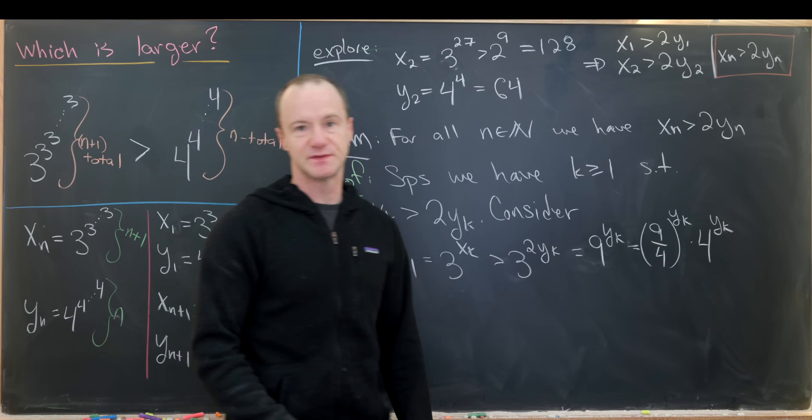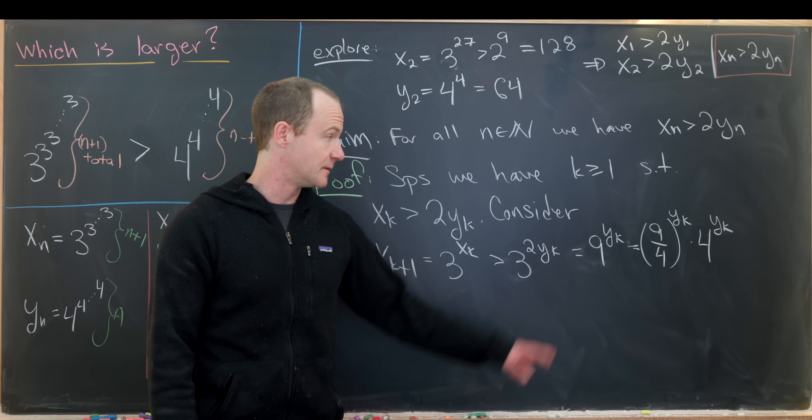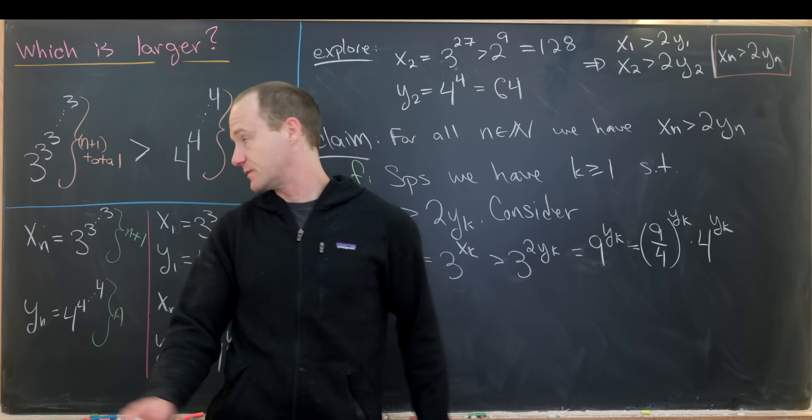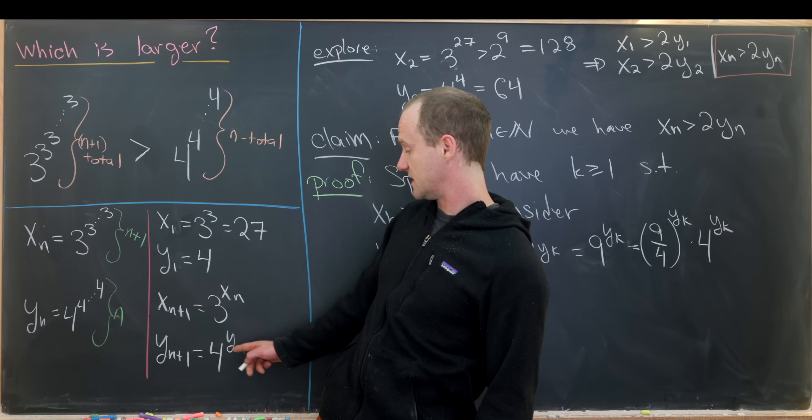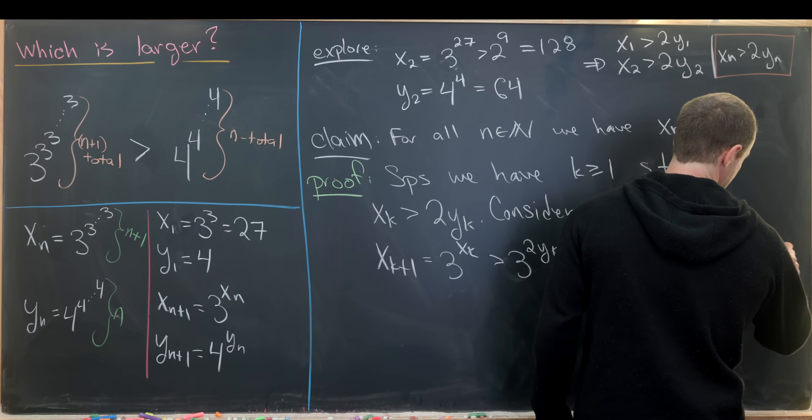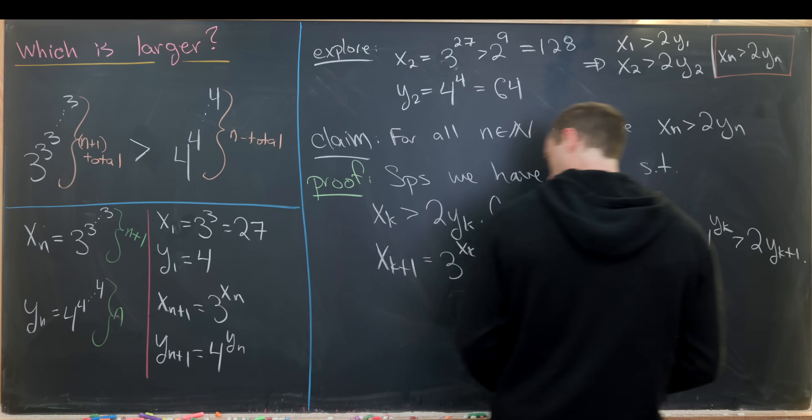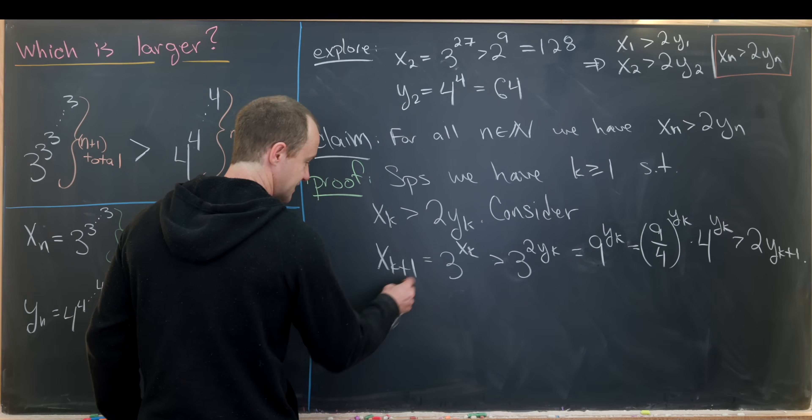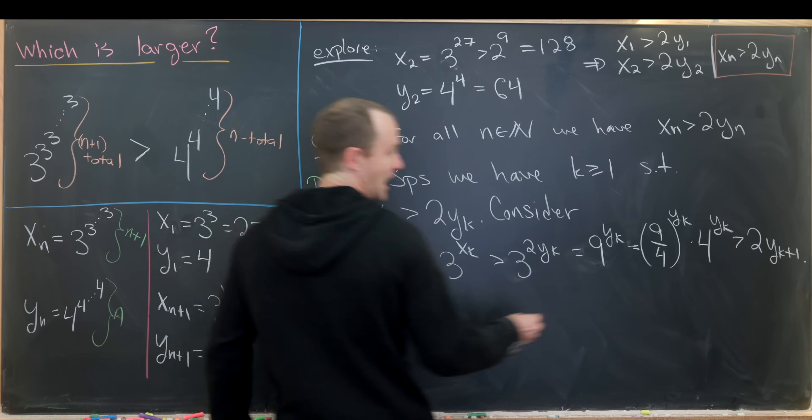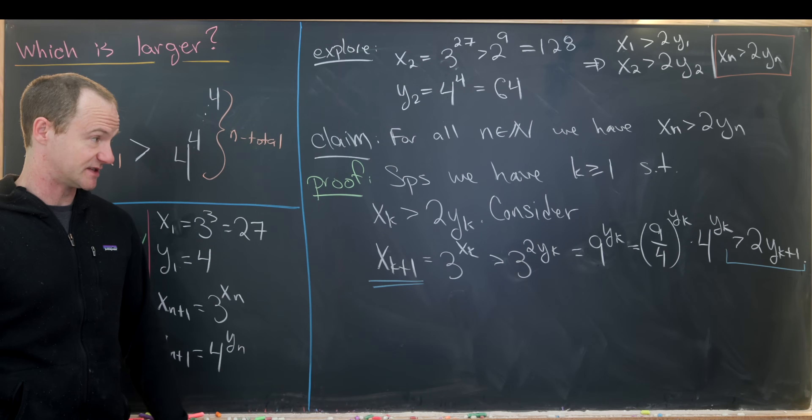But again, 9 over 4 is bigger than 2, so 2 to the yk is bigger than 2. And then we have 4 to the yk, but 4 to the yk is yk+1. So this is going to be bigger than 2 times yk+1. And then looking at this extreme left and right hand side, we see that we have finished our induction step.